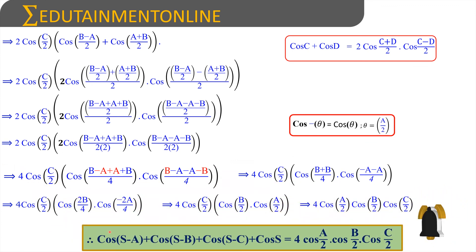Therefore, cos(s - a) + cos(s - b) + cos(s - c) + cos(s) = 4·cos(a/2)·cos(b/2)·cos(c/2). Hence proved.